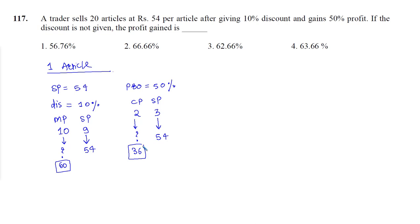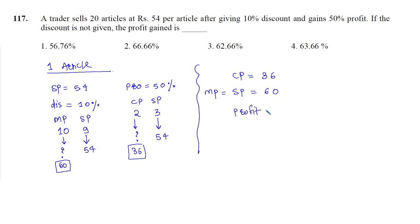Now we are not going to offer any discount. If no discount is given, then marked price becomes selling price. So cost price is Rs 36 and selling price is Rs 60. Profit earned is Rs 24 on Rs 36, into 100. Profit percentage equals profit divided by cost price into 100, which gives 2/3, that is 66.66%. So we can mark option number 2.